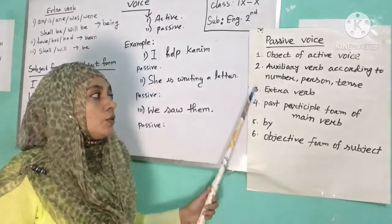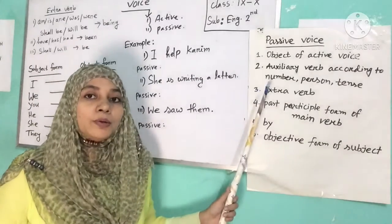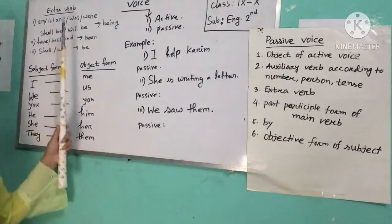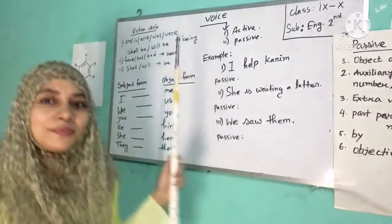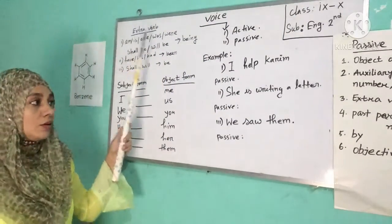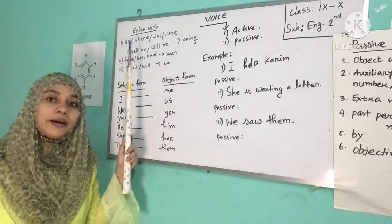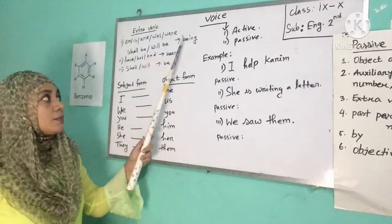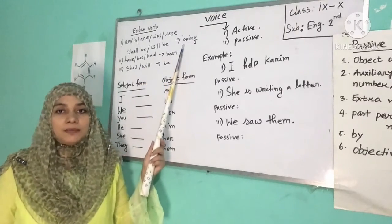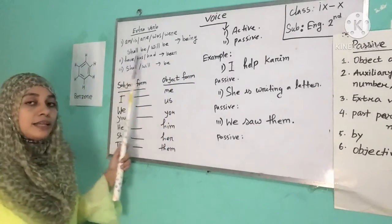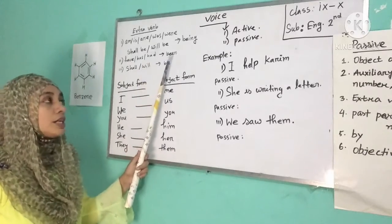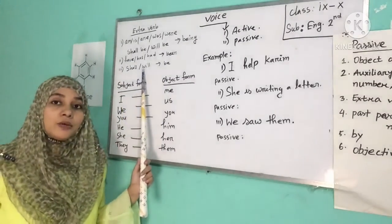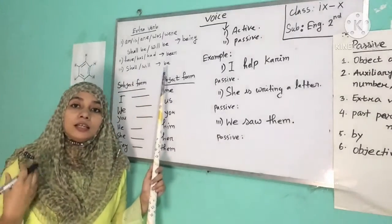Now, let's understand extra verb and objective form of subject in more detail. For extra verb: if we find 'am', 'is', 'are', 'was', 'were', 'shall be', or 'will be' in the active voice, we use extra verb 'being' in the passive voice. If we find 'have' or 'has' in active voice, we also use 'being'. If we find 'shall' or 'will', we use 'be' in the passive voice.